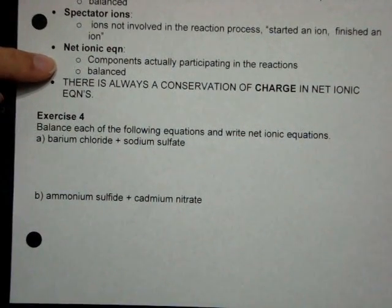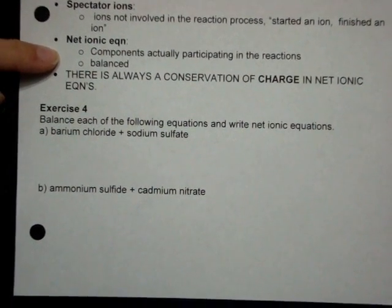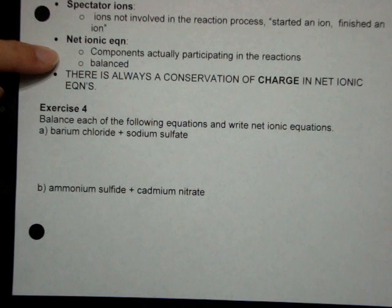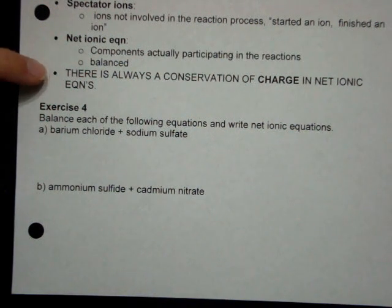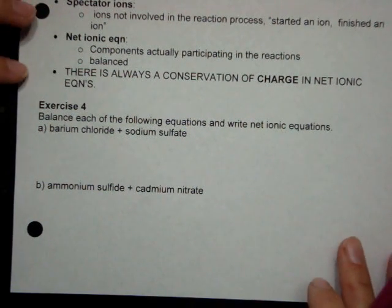We remove anything that is a spectator or that's not involved. It's just sitting there watching what the other things are doing, kind of like if you go watch a hockey match. And then finally, the net ionic equation is once you remove those spectators, what's actually remaining. Here's a little reminder from our quiz question the other day: there is always a conservation of charge, so you have the same mass, you have the same atoms, and you have the same number of electrons in there.